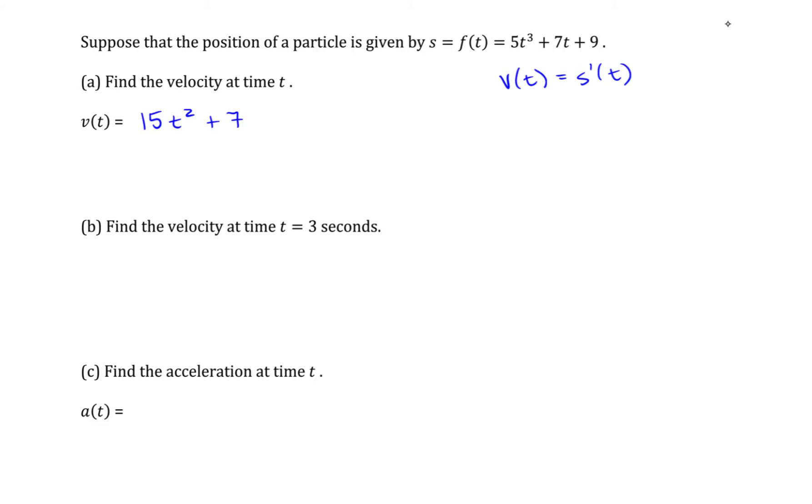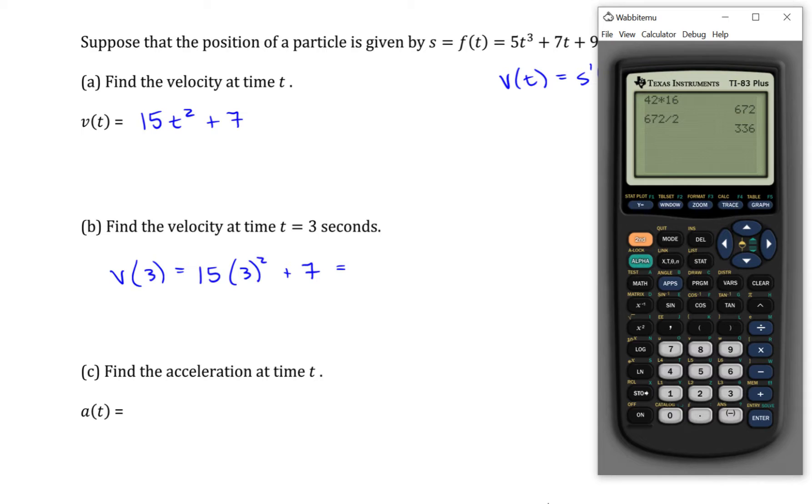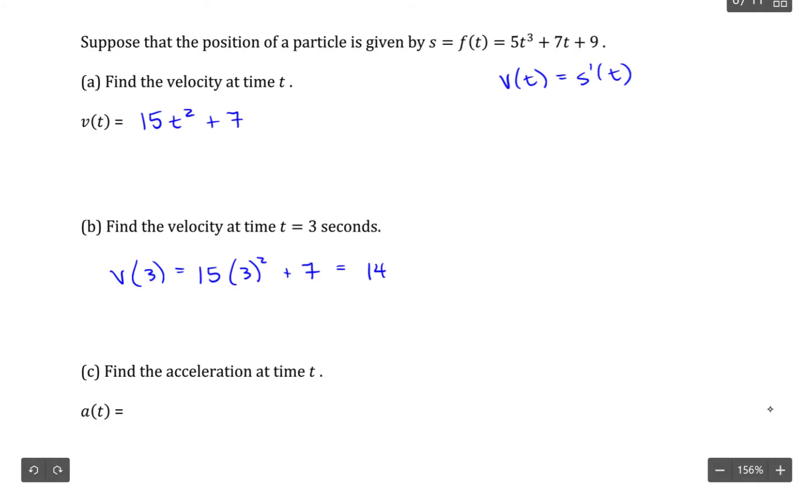Find the velocity at t equals 3 seconds. So the velocity after 3 seconds would be 15 times 3 squared plus 7, for which we'll use our calculator here. Which is 142. It's in seconds. Doesn't seem to give a unit for distance here, so I'll just leave it unitless.